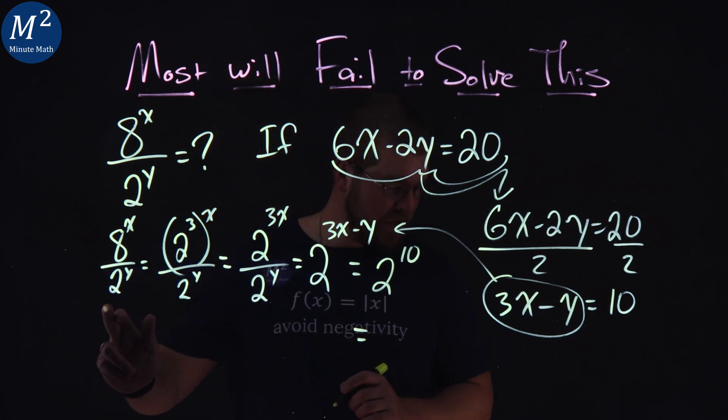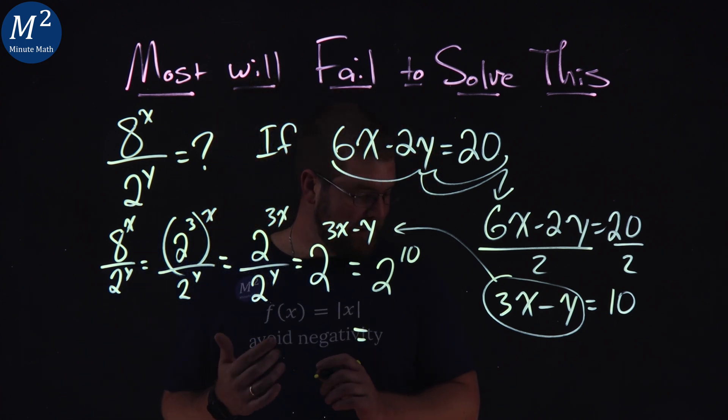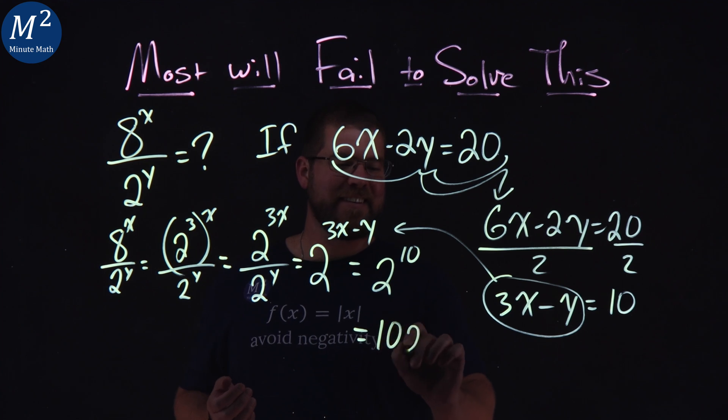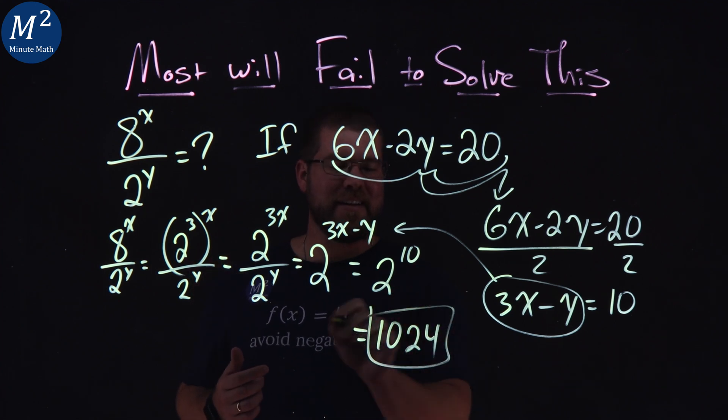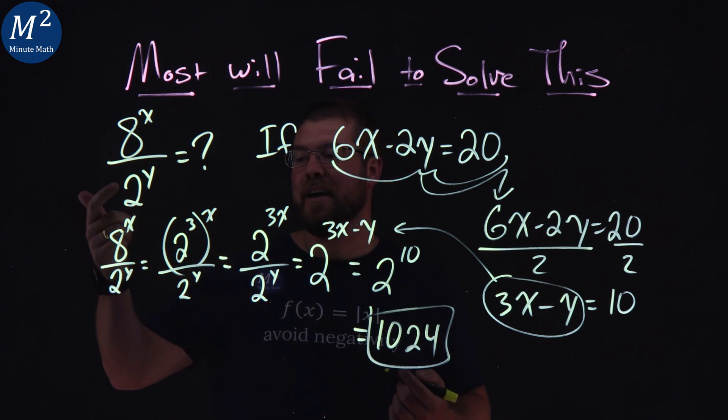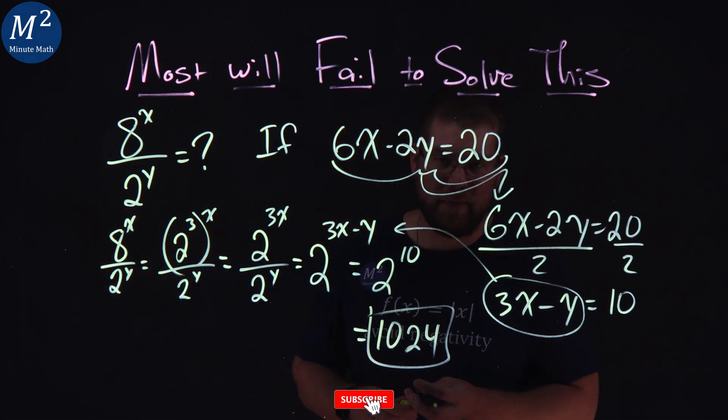And 2 to the 10 power here is, just double checking, 1024. Okay? So 2 to the 10 power is 1024, which is equal to our 8 to the x power over 2 to the y power.